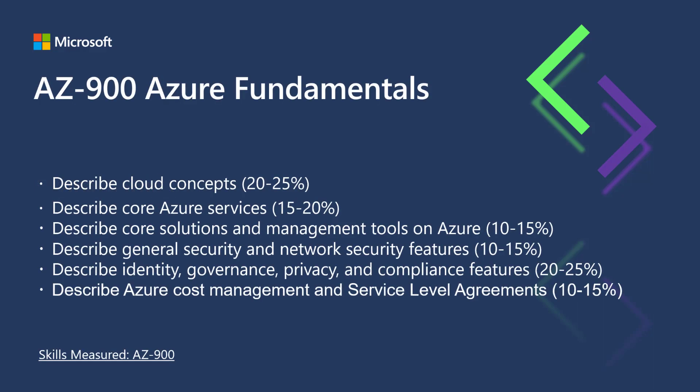As I previously mentioned, AZ-900 is broken down into six major sections. When you start the exam, you'll receive items from each of the sections based upon the percentages you see on the slide. The first section is describing cloud concepts, or the basics of why the cloud exists. The second section is describing core Azure services, or the building blocks that are provided with Azure. The third section is describing both core solutions and management tools that exist within Azure. The fourth section is about describing general security and network security features of Azure. The fifth section covers identity, governance, privacy, and compliance, all of which are very important topics. Finally, the last section covers describing Azure cost management and SLAs, or service level agreements.